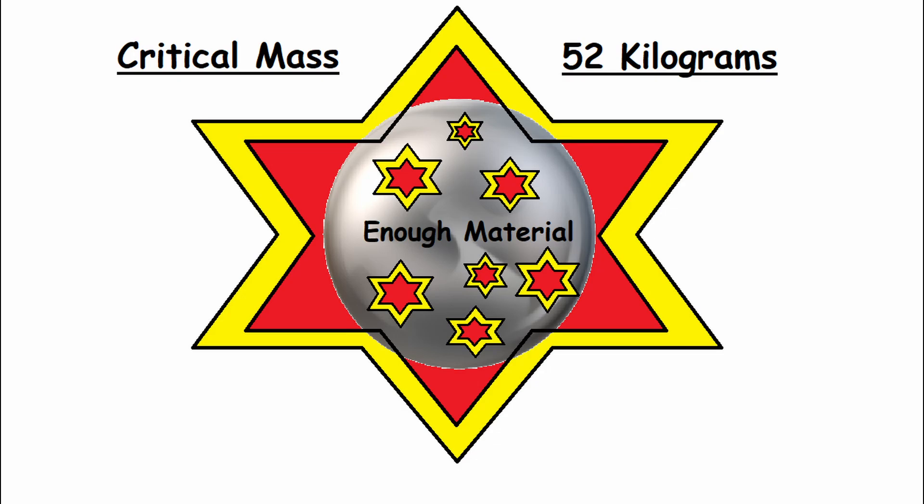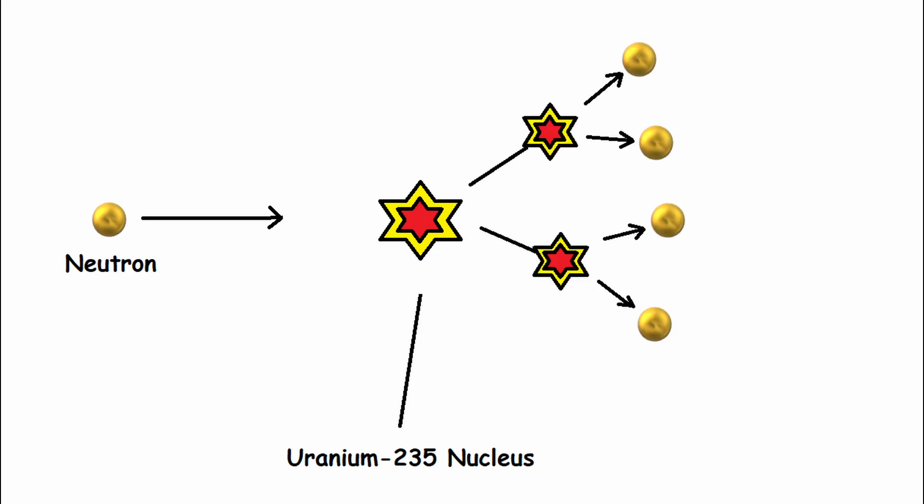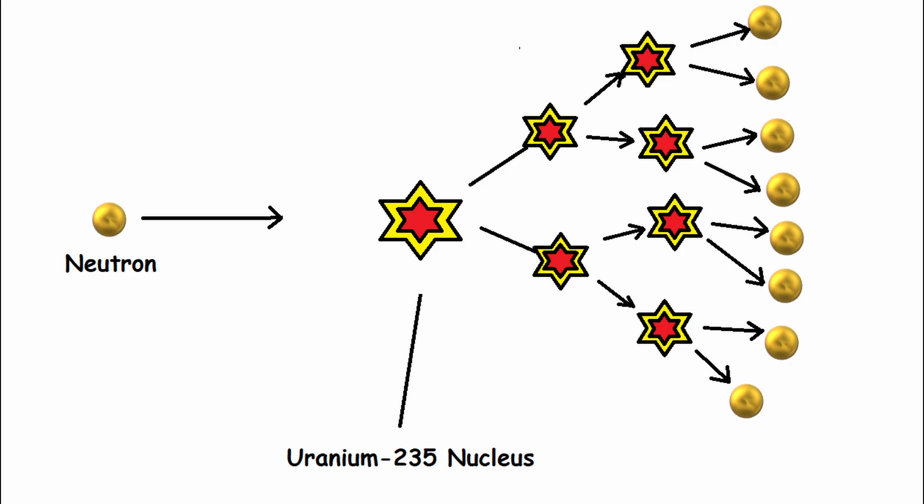In a chunk of uranium this size, one uranium nucleus releases roughly two and a half neutrons upon being split. Then those two neutrons split two more nuclei, thus releasing four neutrons, which go on to split four nuclei, and so on.